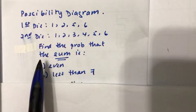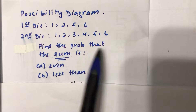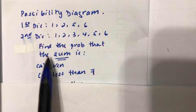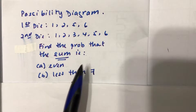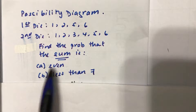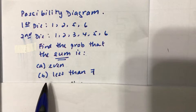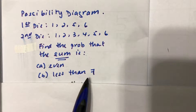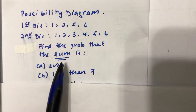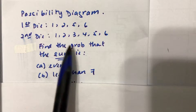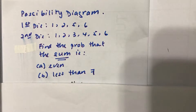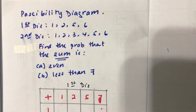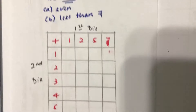The question says that you want to find the probability that the sum of the two dice, when you roll them, will be even or less than seven. Since they actually want a sum, we can use the possibility diagram to help us.